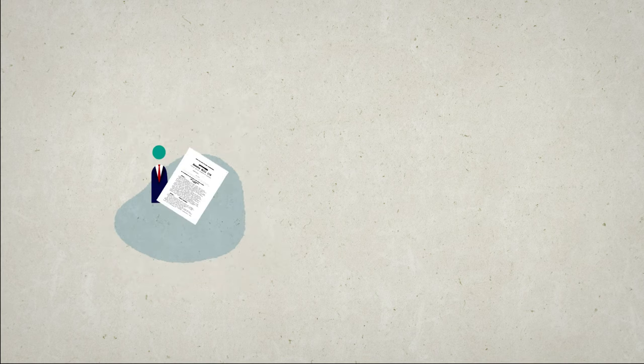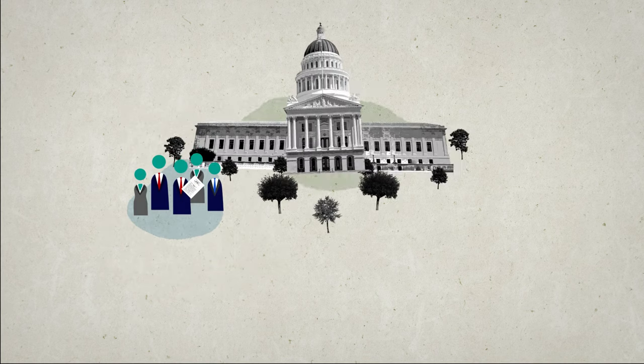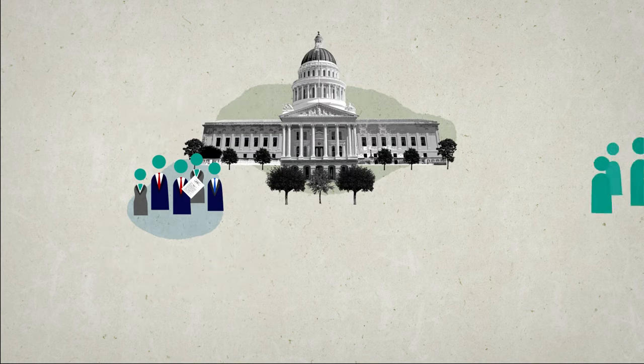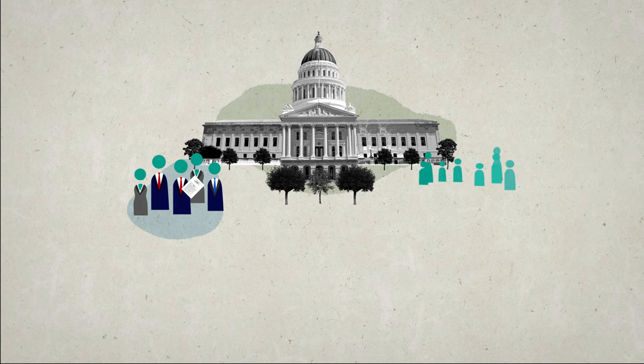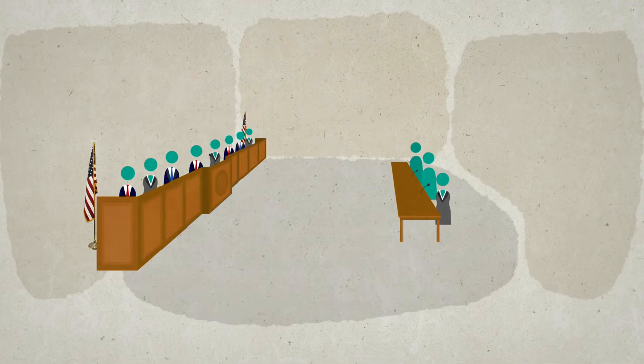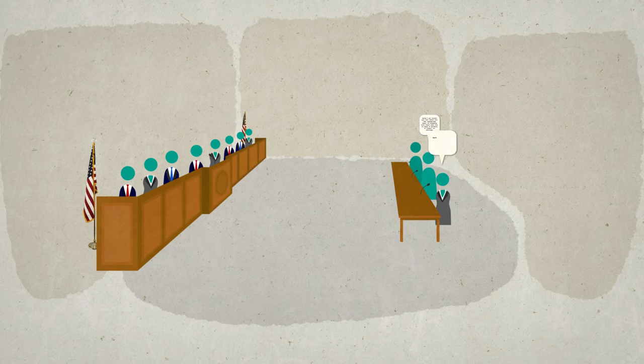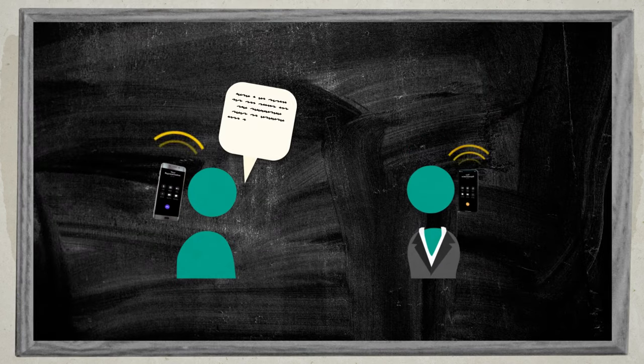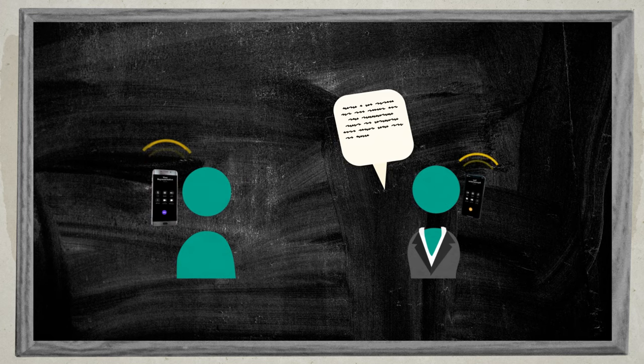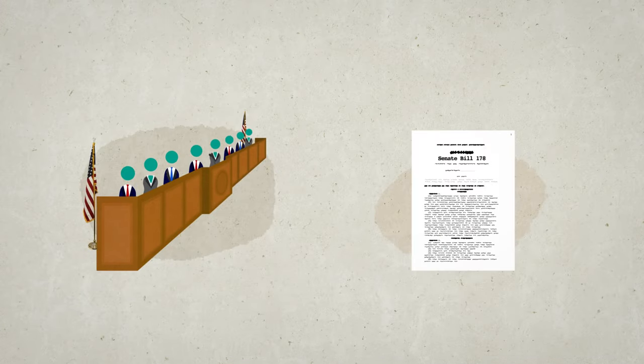The bill gets assigned to a committee, and the committee holds a hearing. Members of the public come to the state capitol to testify for and against the bill. The committee asks questions and listens to what people have to say. And we can also call our representatives anytime to let them know what we think about the bill.